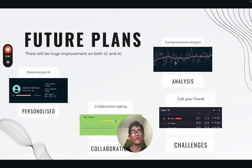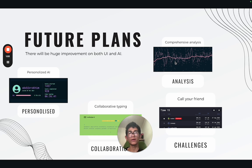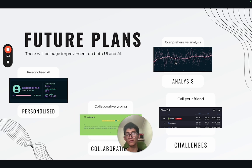We envision a future where our platform is fully powered by AI. There will be huge improvements on both AI and UI. We will work on Firebase authentication and deliver the most personalized application platform. We will introduce comprehensive analysis and metrics on typing tests, and we will introduce collaboration and challenges so you can call your friends, challenge them, and collaboratively type with them. There are a lot of interesting things that will happen soon.